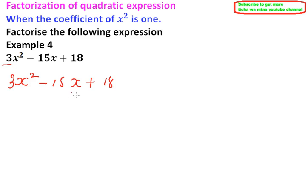So we divide by 3 throughout. 3 divided by 3 is 1, 15 divided by 3 is 5, 18 divided by 3 is 6.